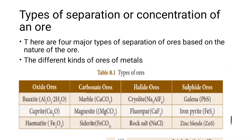There are four major types of separation of ore, classified based on the nature of the ore. The different kinds of ores of metals are: oxide ore — bauxite, kybrite, hematite; carbonate ore — marble, magnesite, siderite; halide ore — cryolite, fluorospar, rock salt; and sulfide ore — galena, iron pyrites, zinc blende.